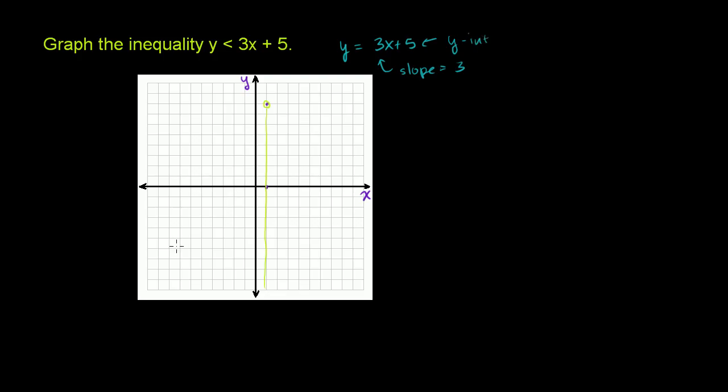Now, I could just graph the line. But because that won't be included in the y's that satisfy this constraint, I'm going to graph it as a dotted line. So we'll start with the y-intercept of 5. So 1, 2, 3, 4, 5. That's the y-intercept.